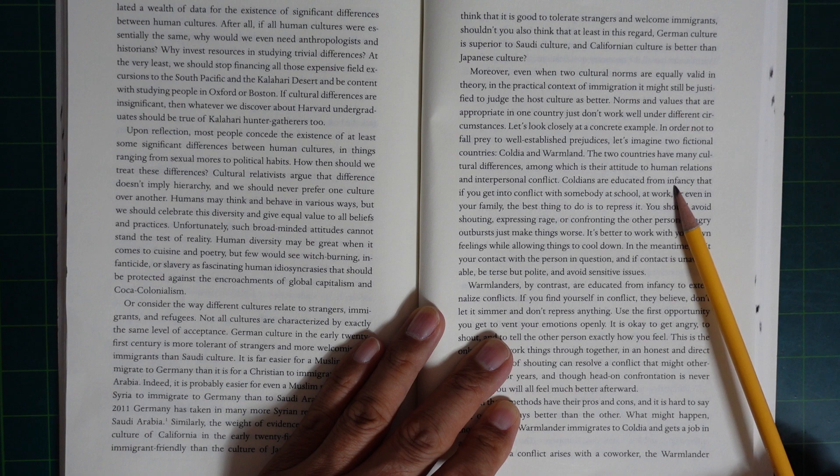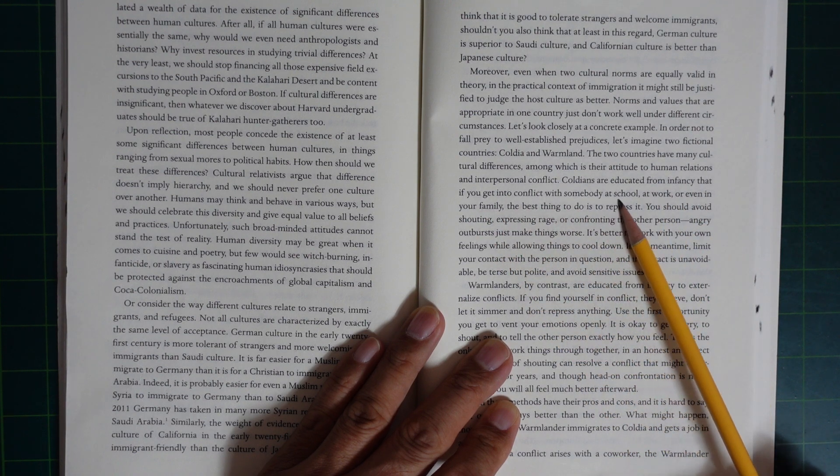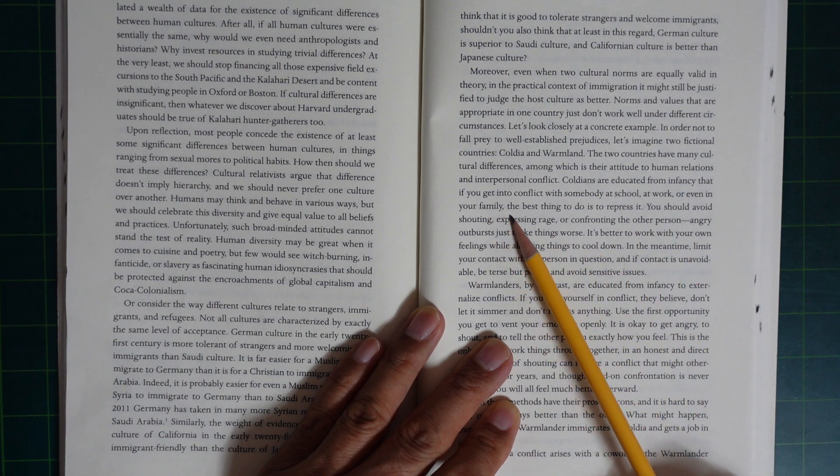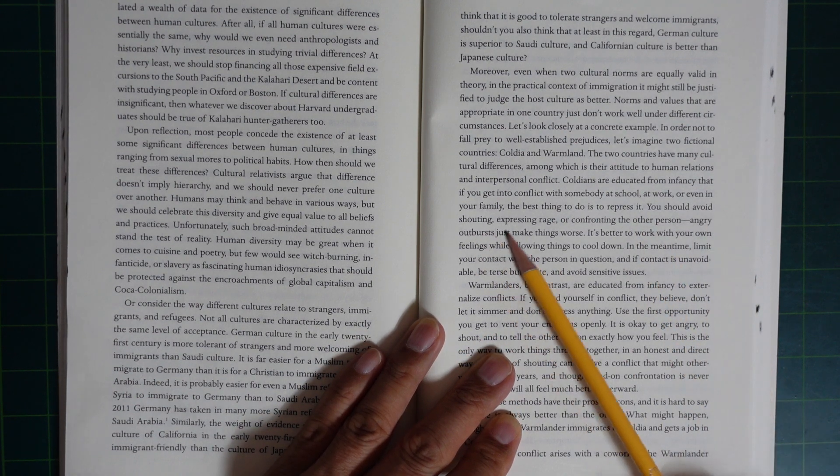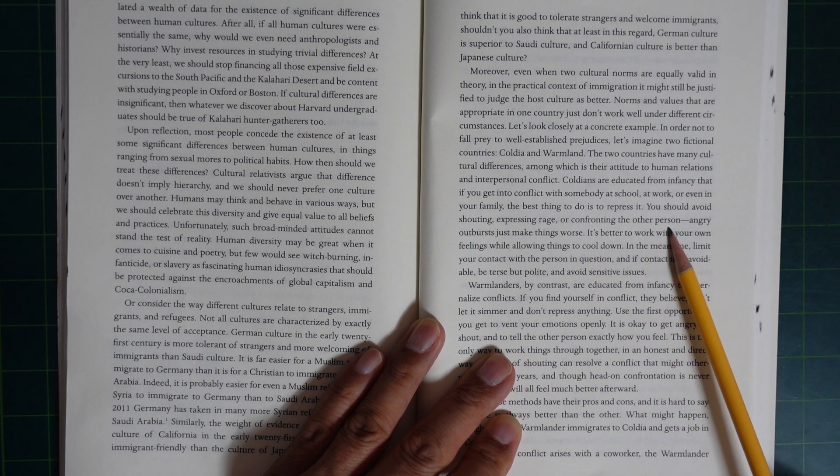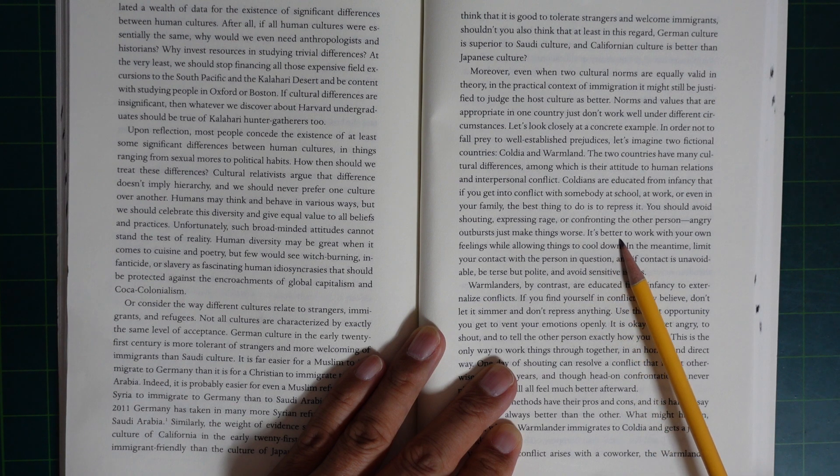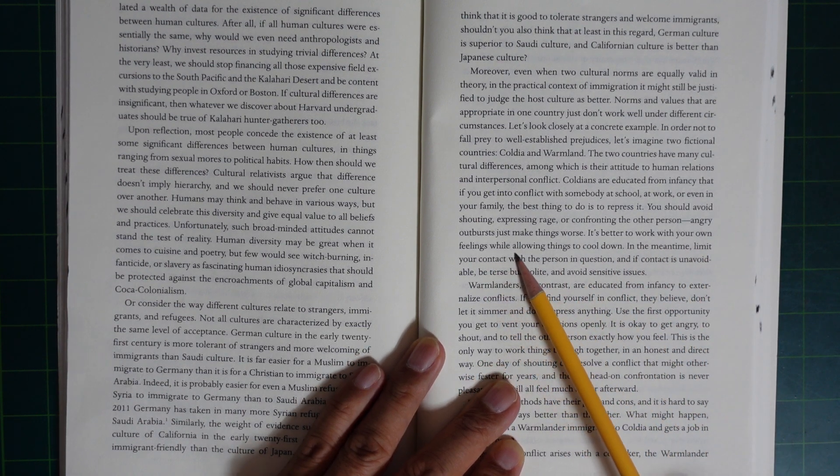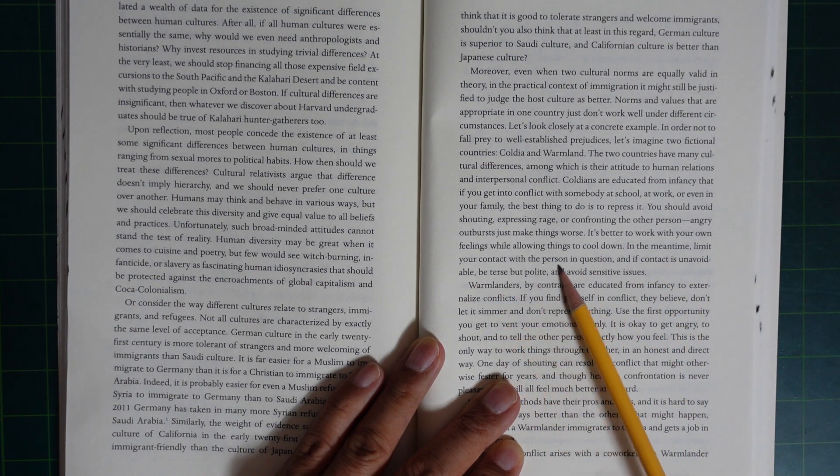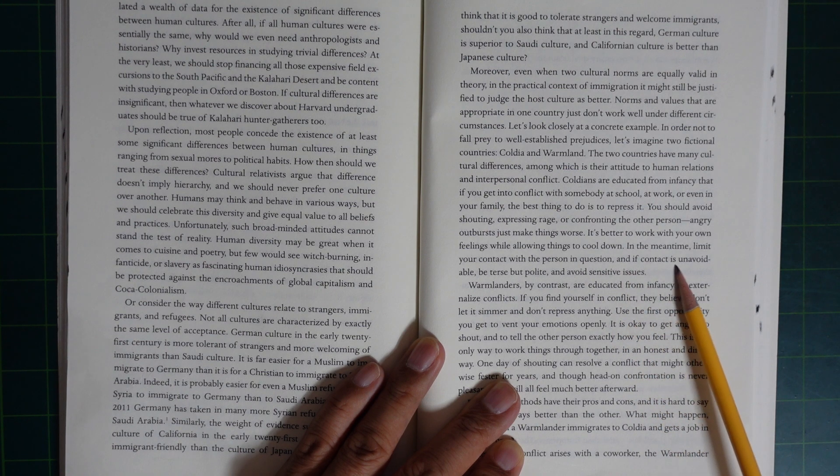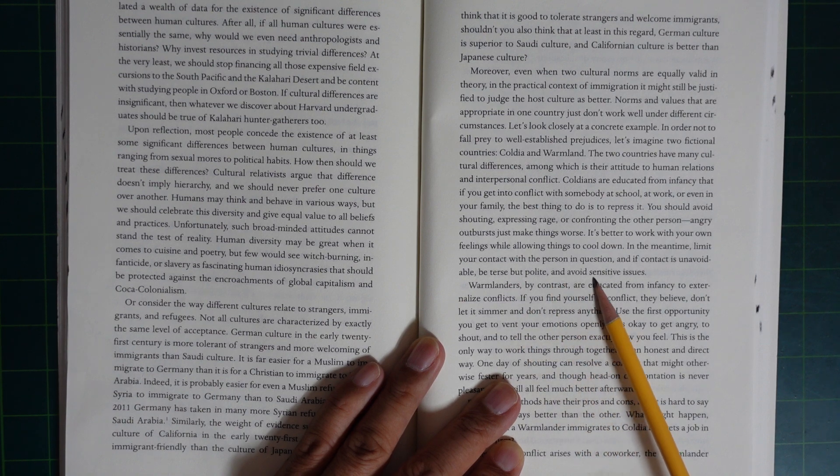Coldeans are educated from infancy that if you get into a quarrel with somebody at school, at work, or even in your family, the best thing to do is to repress it. You should avoid shouting, expressing rage, and confronting the other person. Anger and outbursts just make things worse. It's better to work with your own feelings while allowing things to cool down. In the meantime, limit your contact with the person in question, and if contact is unavoidable, be tough but polite and avoid sensitive issues.